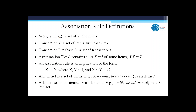A transaction is essentially one e-commerce shopping cart — a collection of items you bought. Then we talk about a whole set of transactions, which is the transaction database, and that is your feed for identifying patterns. A transaction is basically a collection of items, and we discover an association rule of the type X implies Y.